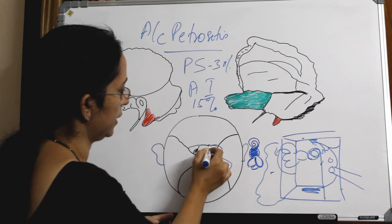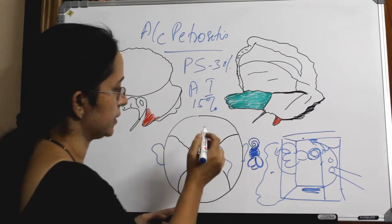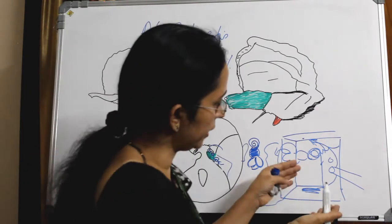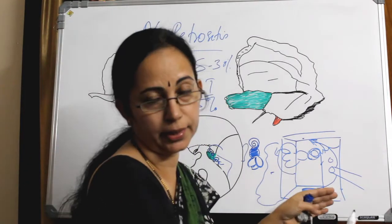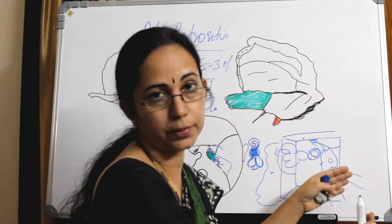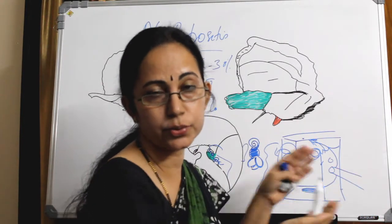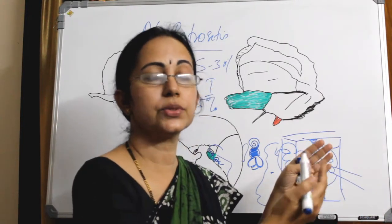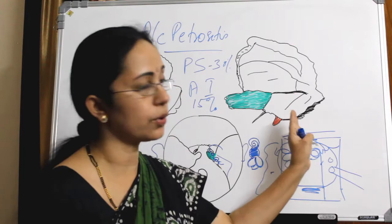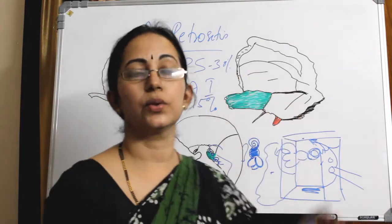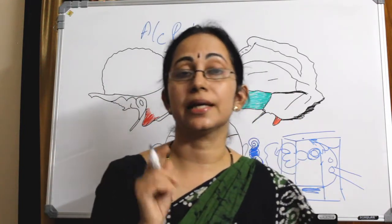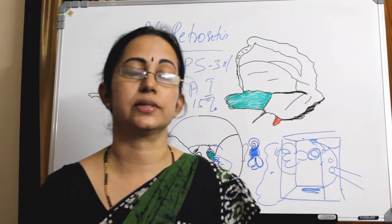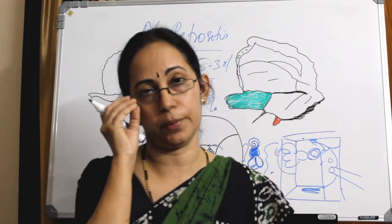So the anteroinferior route goes anteriorly and inferiorly — around the Eustachian tube and around the cochlea — to the petrous apex, and that is seen in only 15% of cases, which is less common.